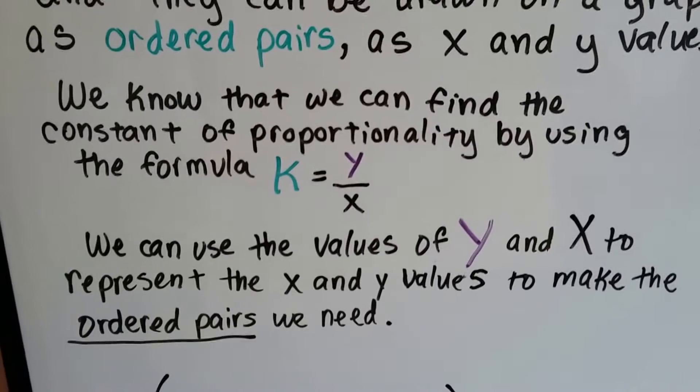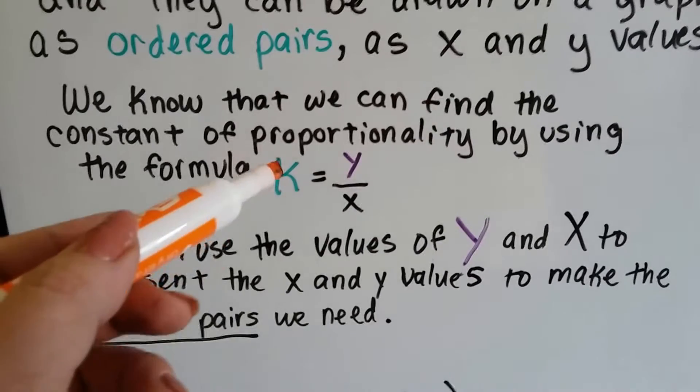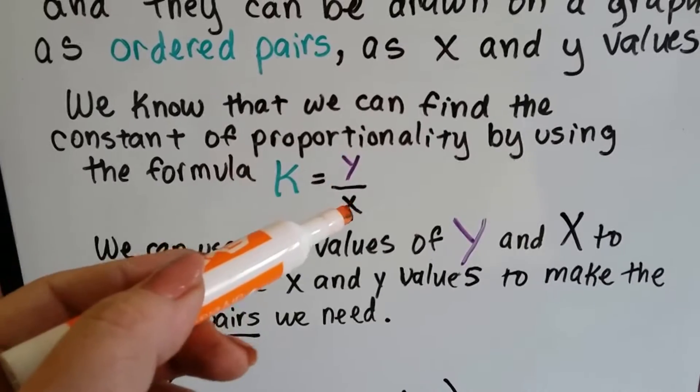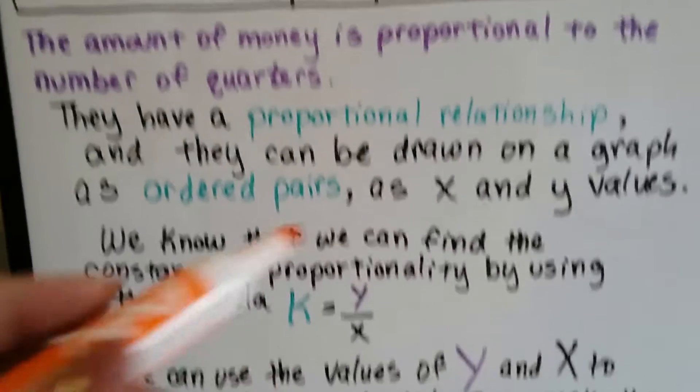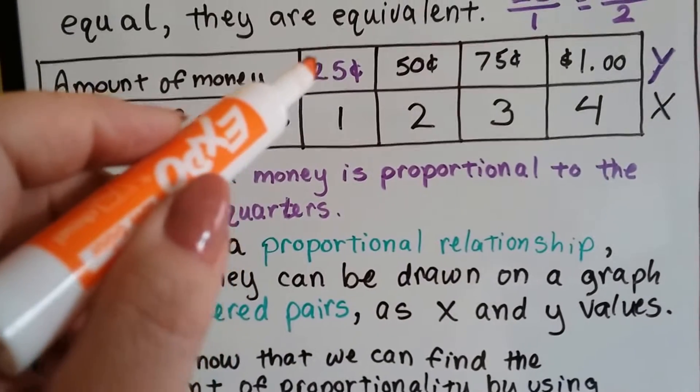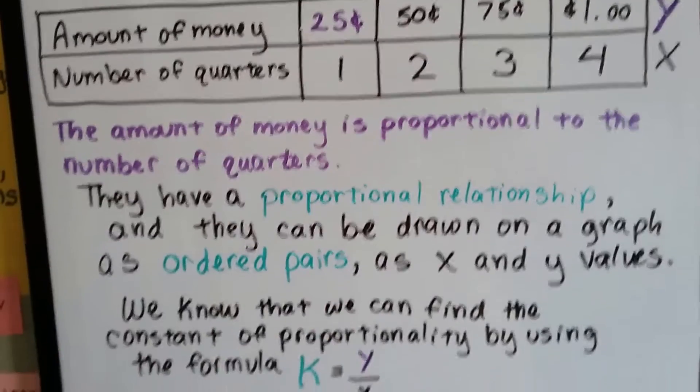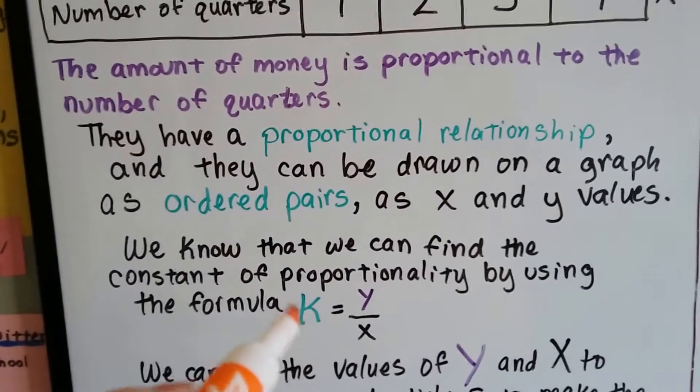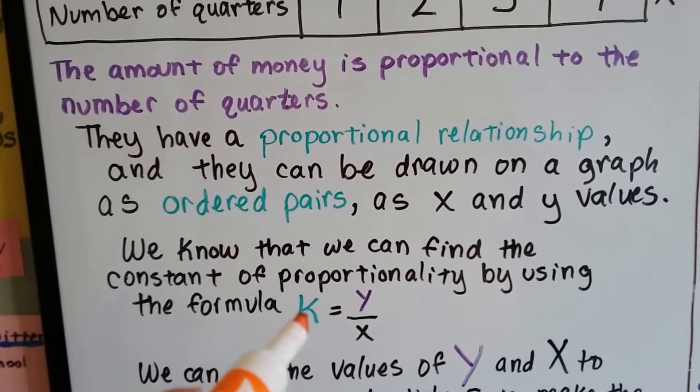And we know from the previous video that we can find the constant of proportionality by using this formula: k equals y divided by x. And we can see that that would work. 25 divided by 1 is 25, so our constant of proportionality, k, would be 25.